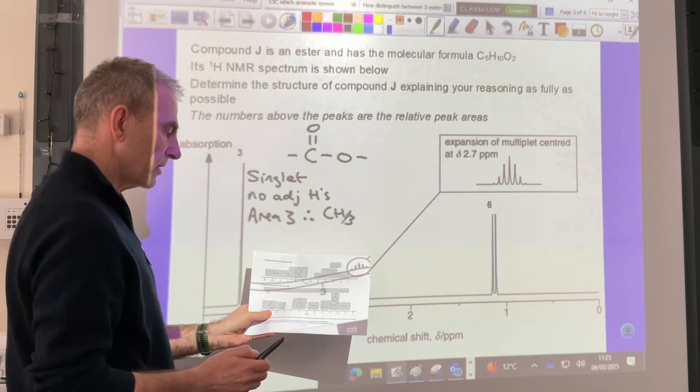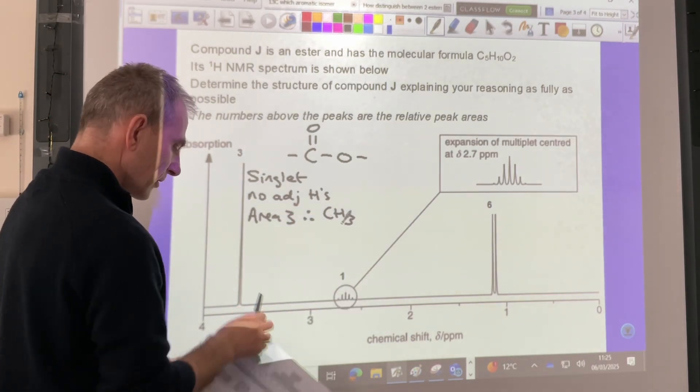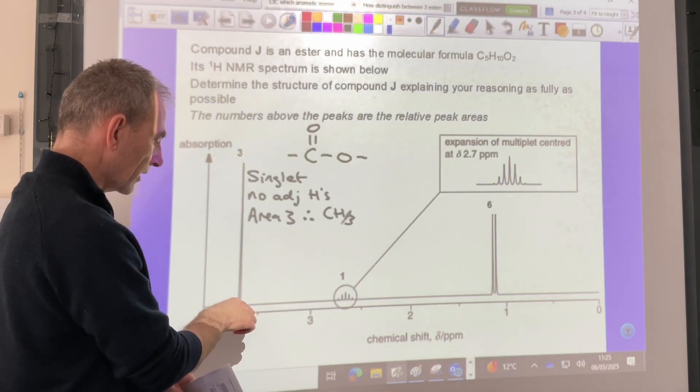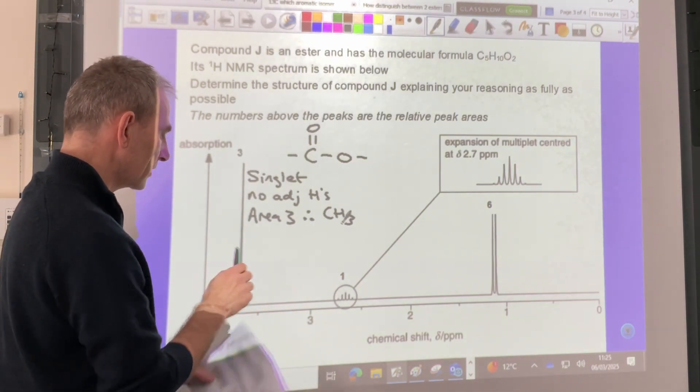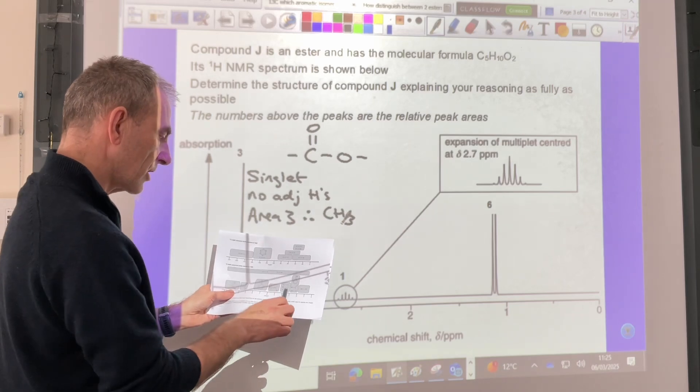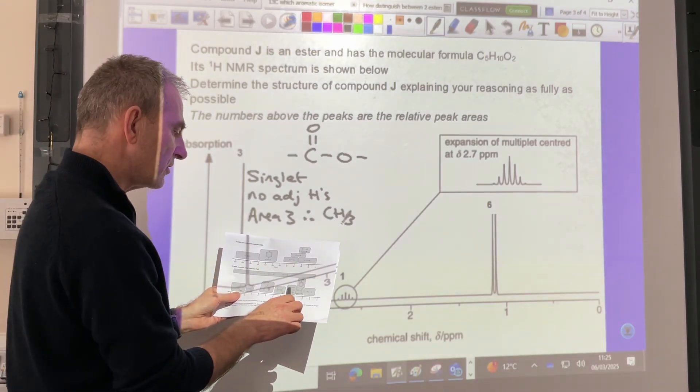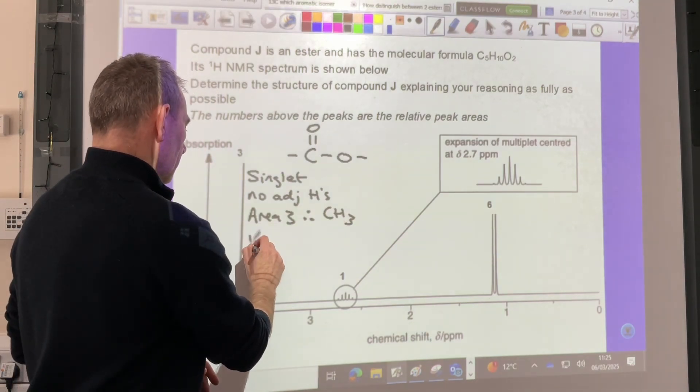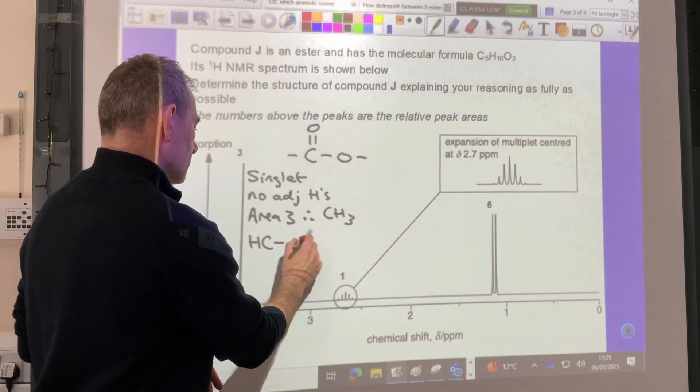And then the last thing I do is I go to the datasheet and I find the environment for this shift value of 3.7. So we know it's an ester, so it kind of rules out certain environments. It's H to C to single bond O, so the environment is H to C to single bond O.